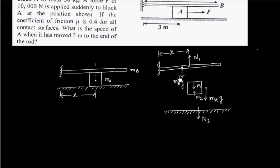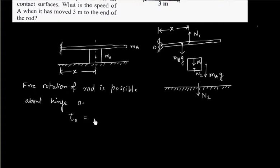So we can calculate normal reaction because this rod is hinged at this point. So let us call this point as O. So free rotation of rod is possible about hinge O. So this means net torque about O is zero.